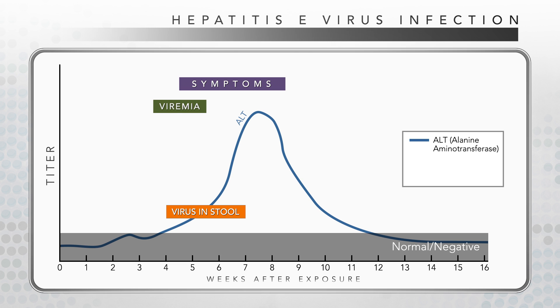Viremia in acute self-limited infections, shown by the green bar, can be detected about three weeks following exposure, or a week or so prior to onset of symptoms, and lasts for about two weeks.